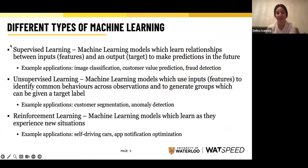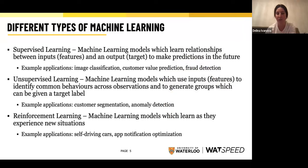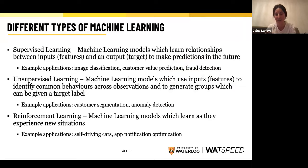There are different types of machine learning models. This field is very big, and we also have the more in-depth area of deep learning, which we do touch on in this certificate. The three main areas of machine learning we'll learn about in the certificate are supervised learning, unsupervised learning, and reinforcement learning. We'll do a quick introduction to deep learning, and reinforcement learning is another area covered through our data science programs at Watspeed in partnership with the University of Toronto.